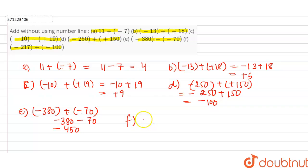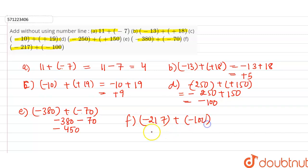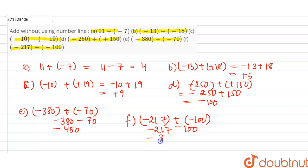Part F is –217 + (–100). Minus minus is plus but the sign will be of the greater one, so the answer is –317.